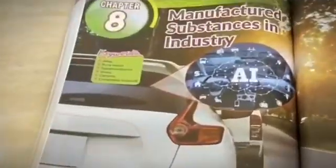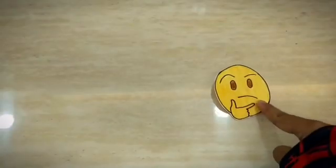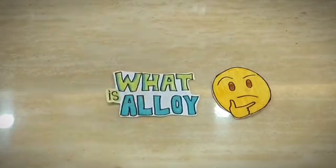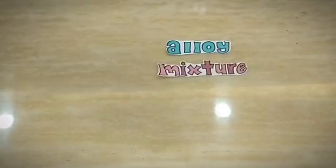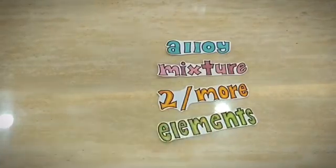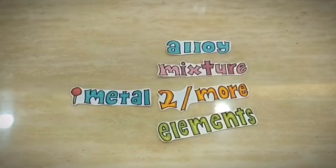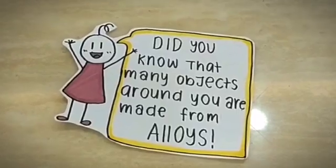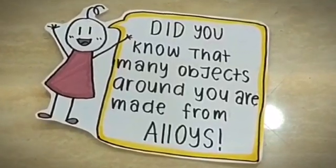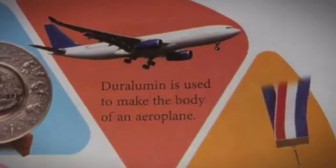We present to you the first subtopic of the last chapter in Form 4 Chemistry textbook: alloys. You might be wondering what is an alloy. An alloy is a mixture of two or more elements where the main element is a metal. Many objects around you are made from alloys.